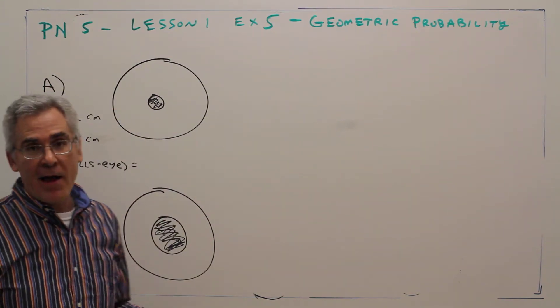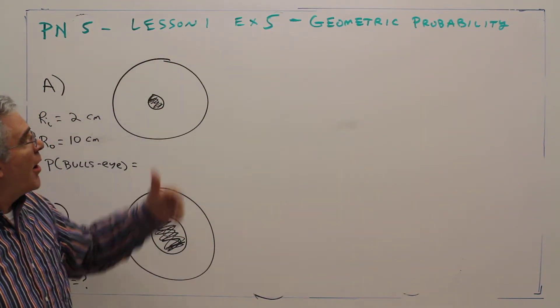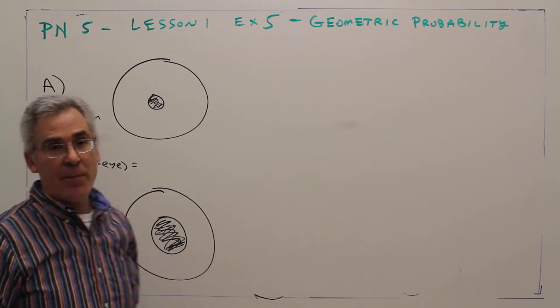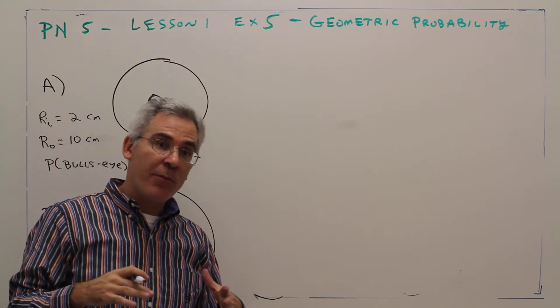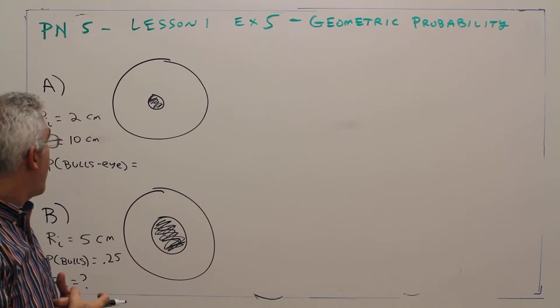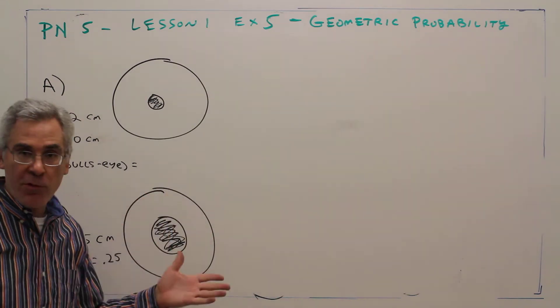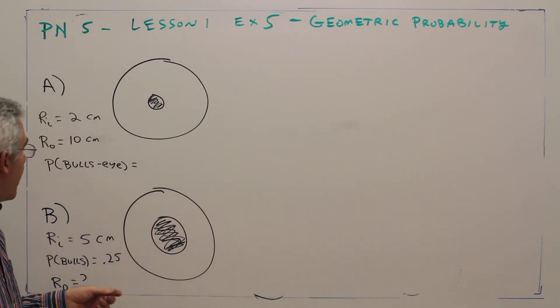Welcome to video PN5. This is lesson one, example five: Geometric probability. We've had some of this before with our ratios. There's three problems. I'll put the third one on later.